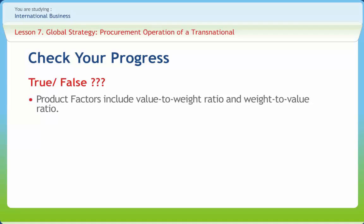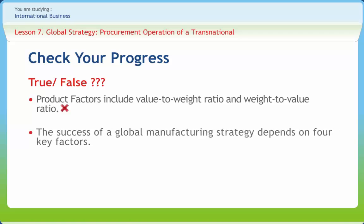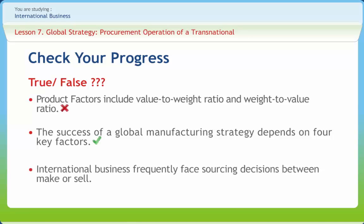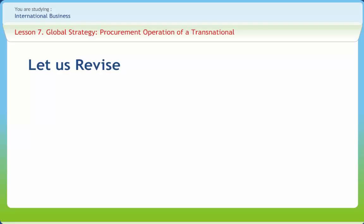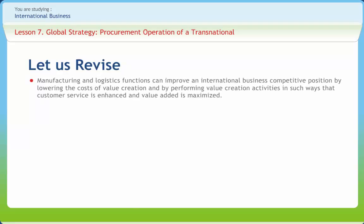Let us check if we have understood the various concepts discussed in this lesson. Product factors include value to weight ratio and weight to value ratio — right or wrong? The success of a global manufacturing strategy depends on four key factors — right or wrong? International businesses frequently face sourcing decisions between make or buy — right or wrong?